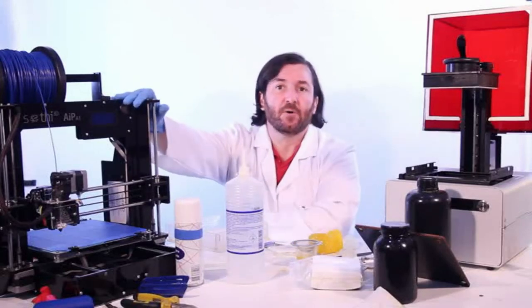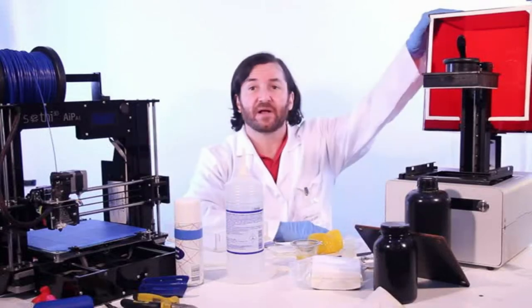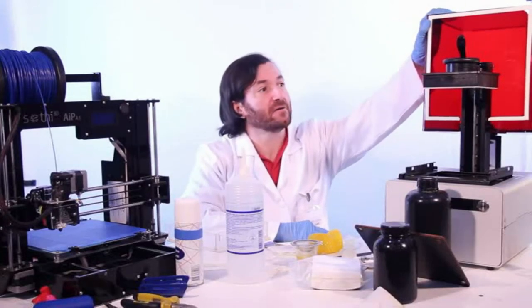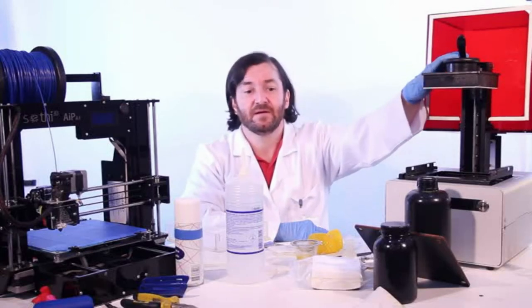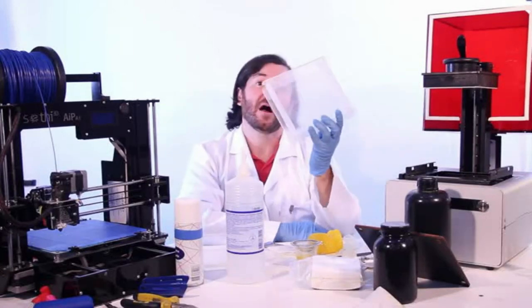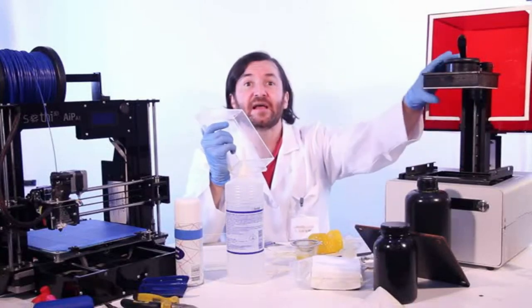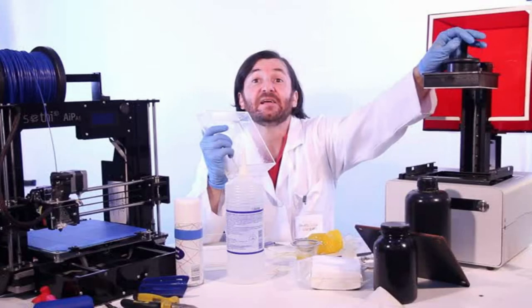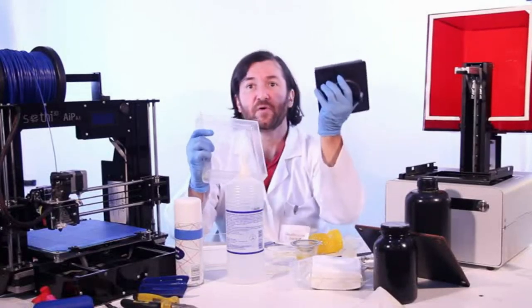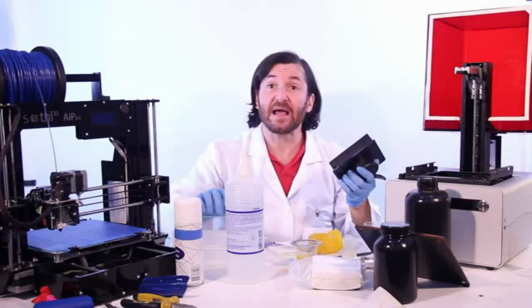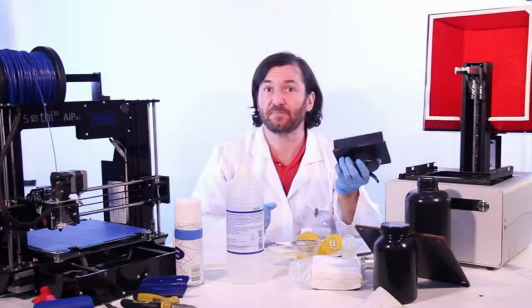This is a typical FDM printer called SETI-3D AIP. This is a typical SLA printer called CTC-Euroway. It's a Form 1 clone. This is the vat, also called resin tank. This fuse here raises and lowers the stage, which is this part here, which can be removed.